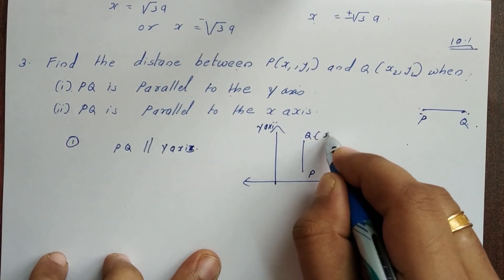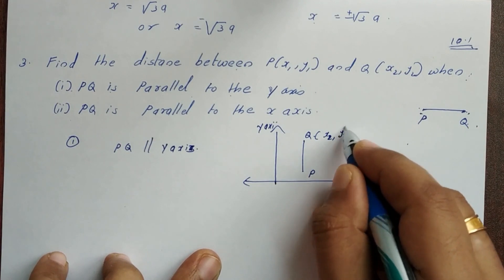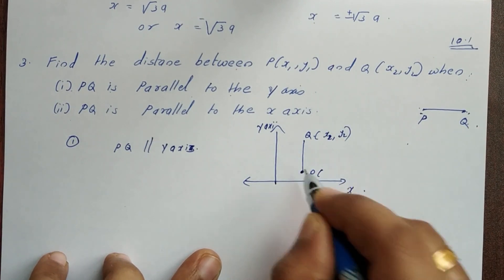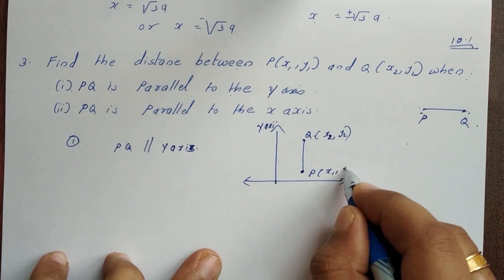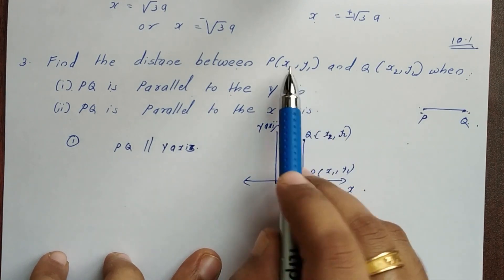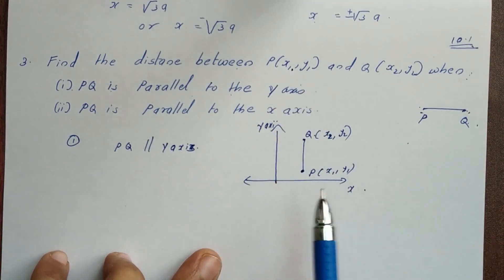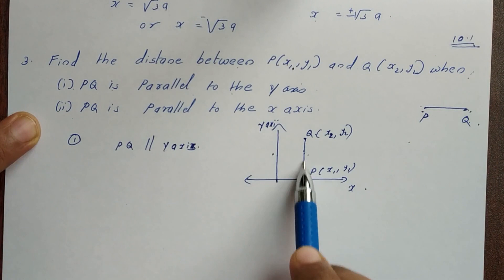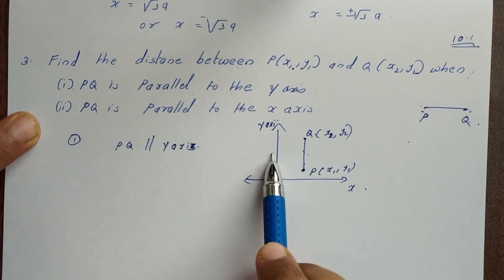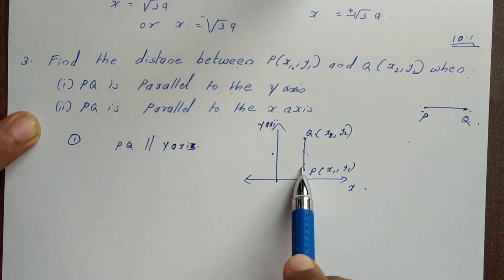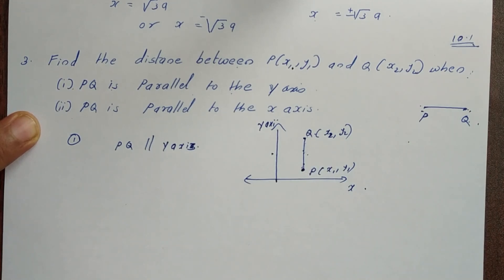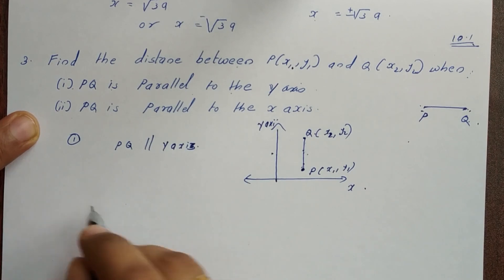Then we find x2,y2 and P as a point, and x1,y1. This line is parallel to the y-axis. So we have to find the PQ distance. If we change the PQ distance, we have to change the distance formula.